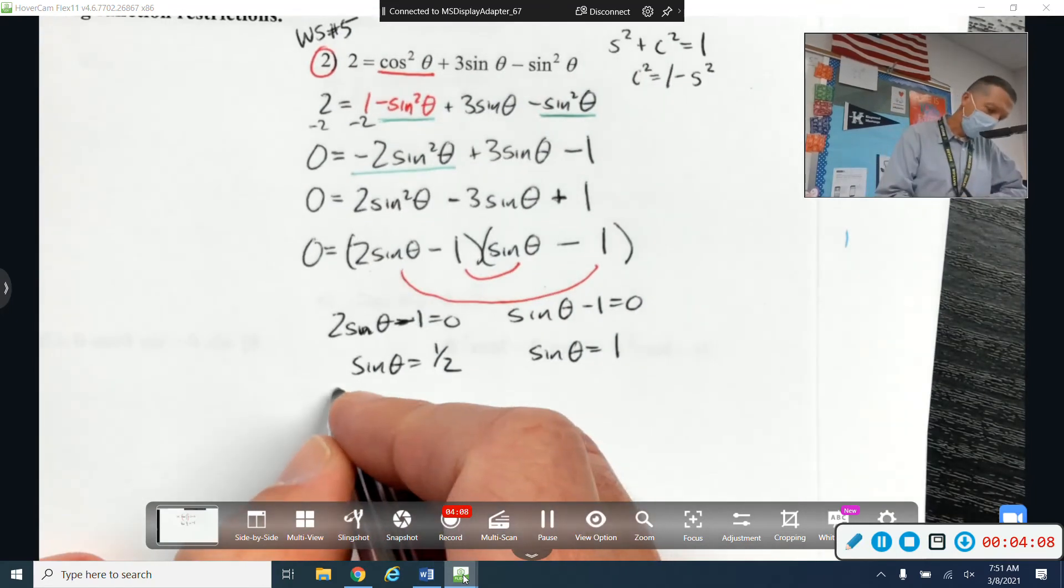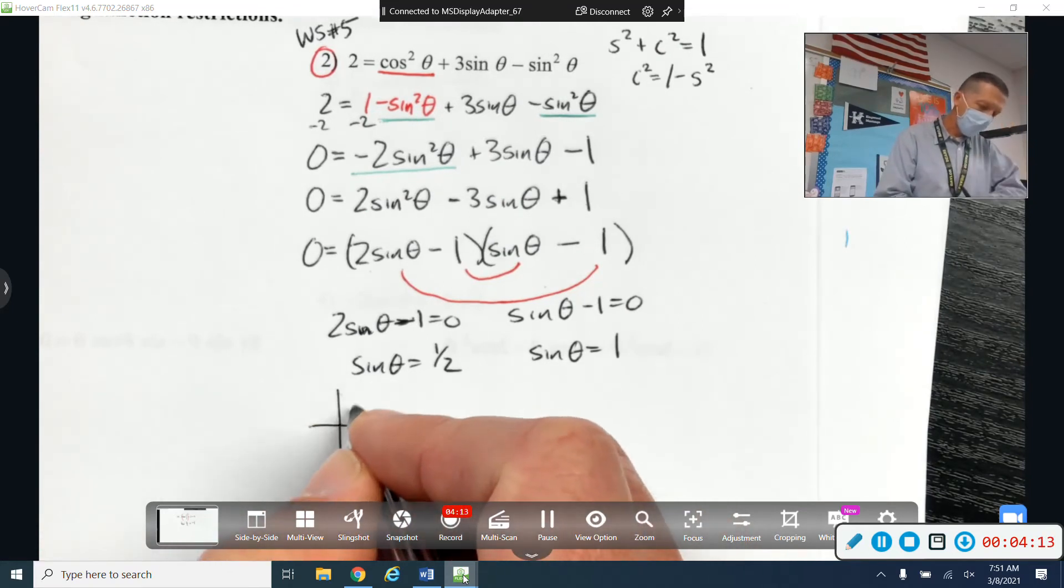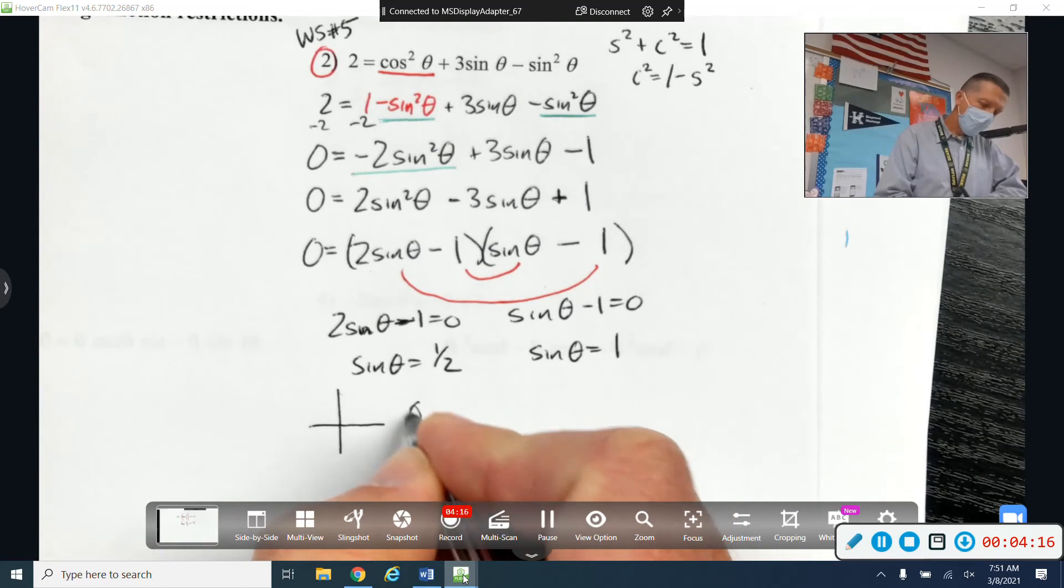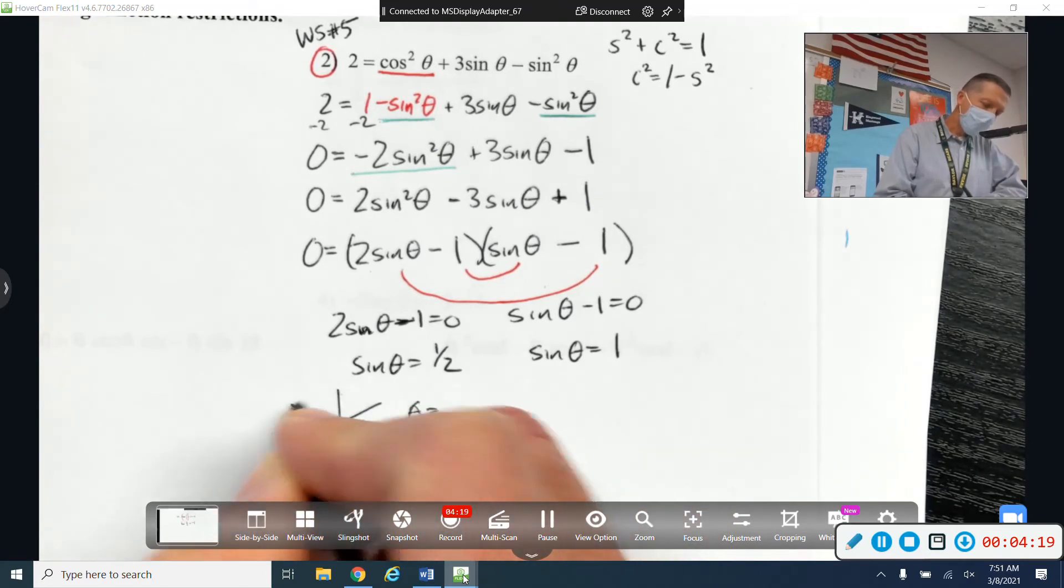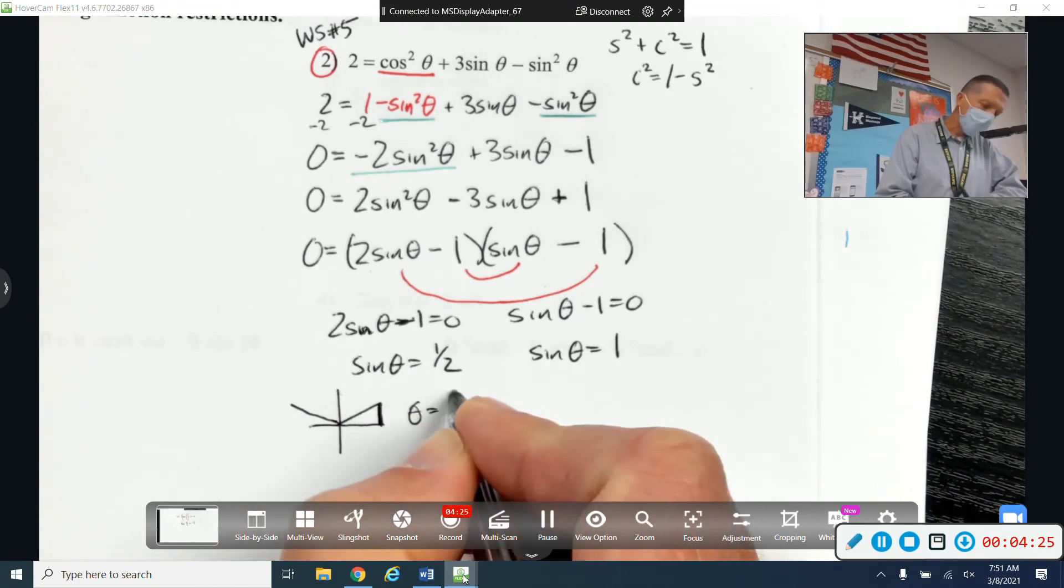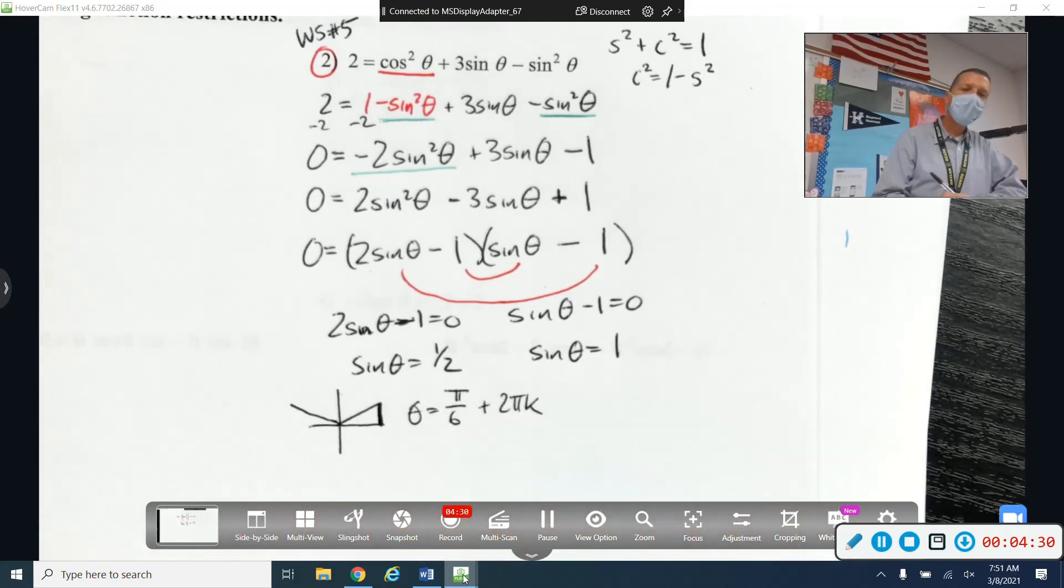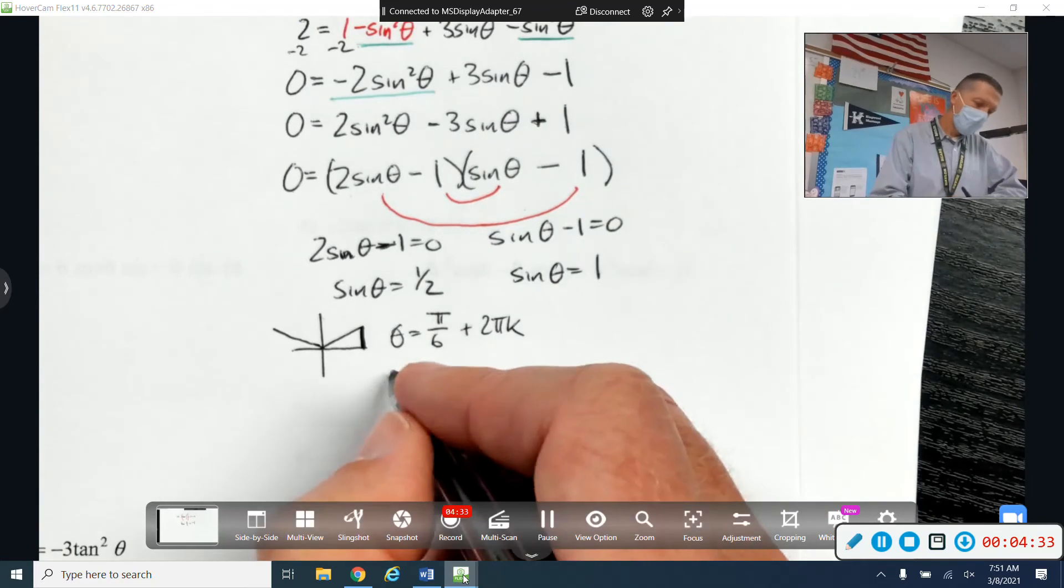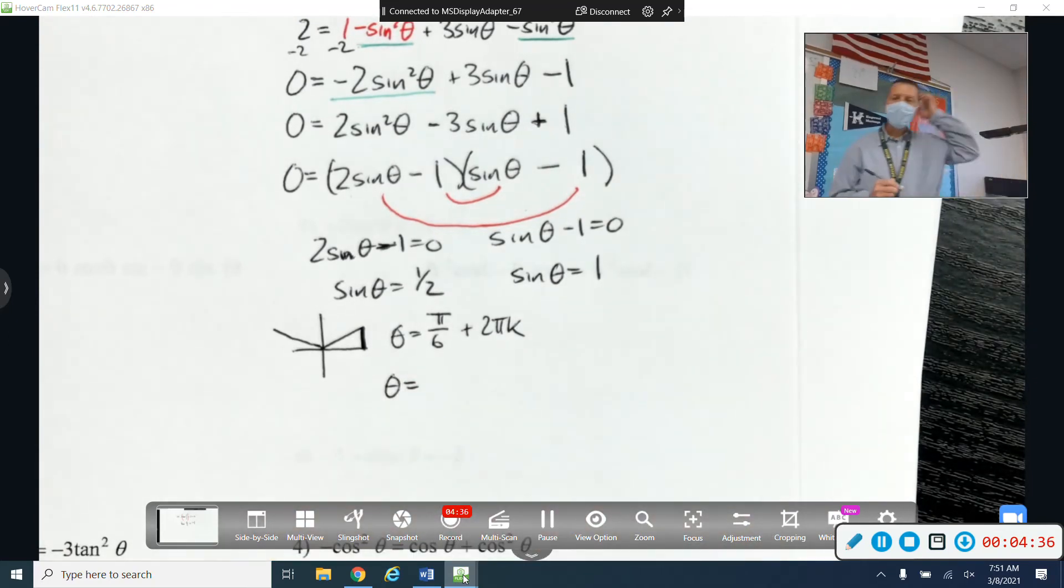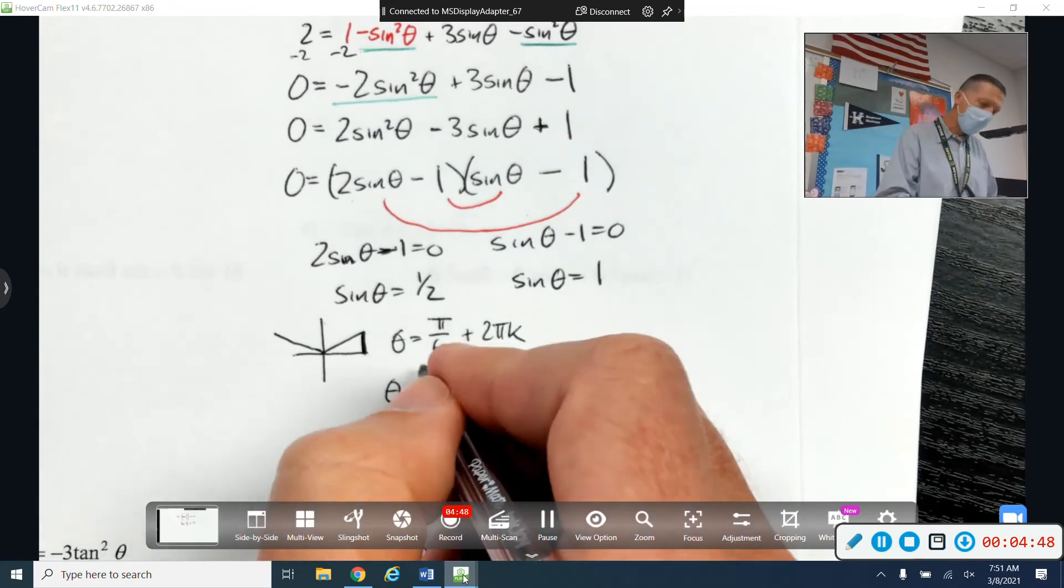Sine of theta is one half. Let's see, first quadrant and second quadrant. Let's see, one half is the short side. So I need the y side to be the short side. So that happens at pi over six. And where else does it happen? I know it's over six because of the reference angle thing. So what's over six in the second quadrant?